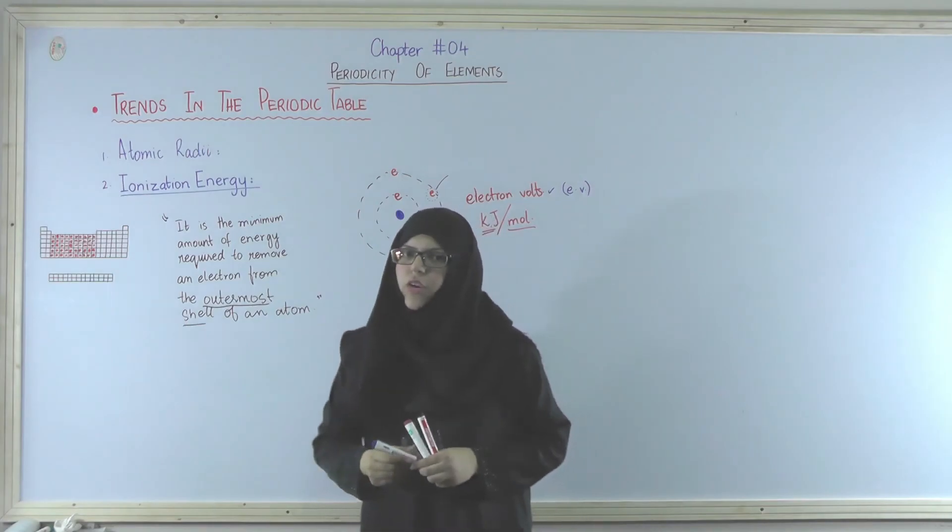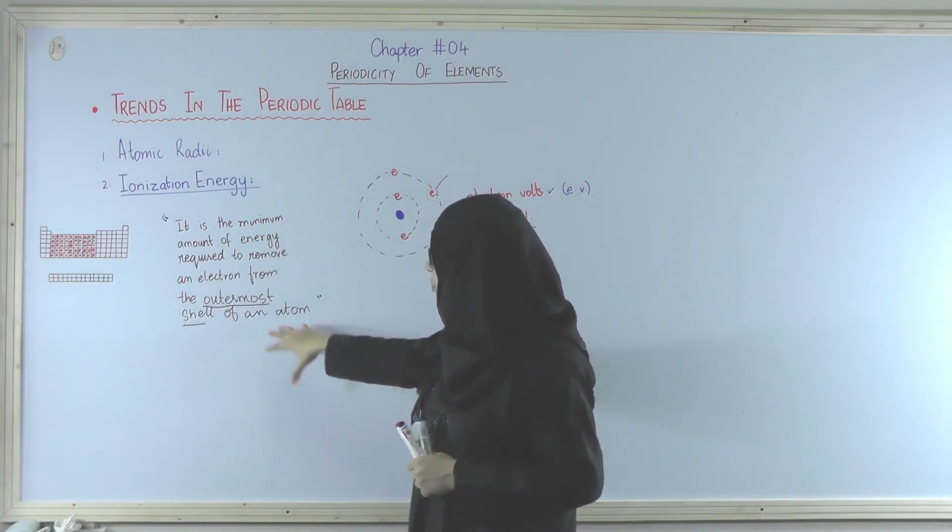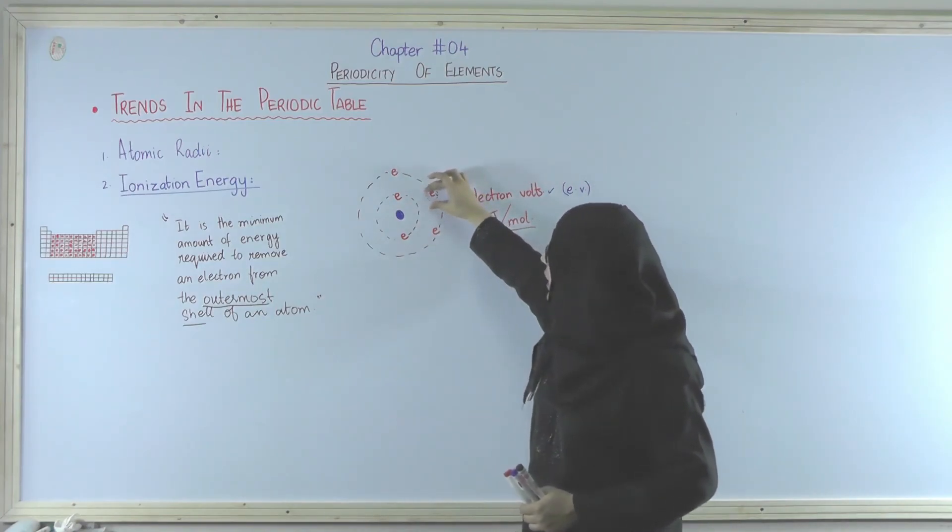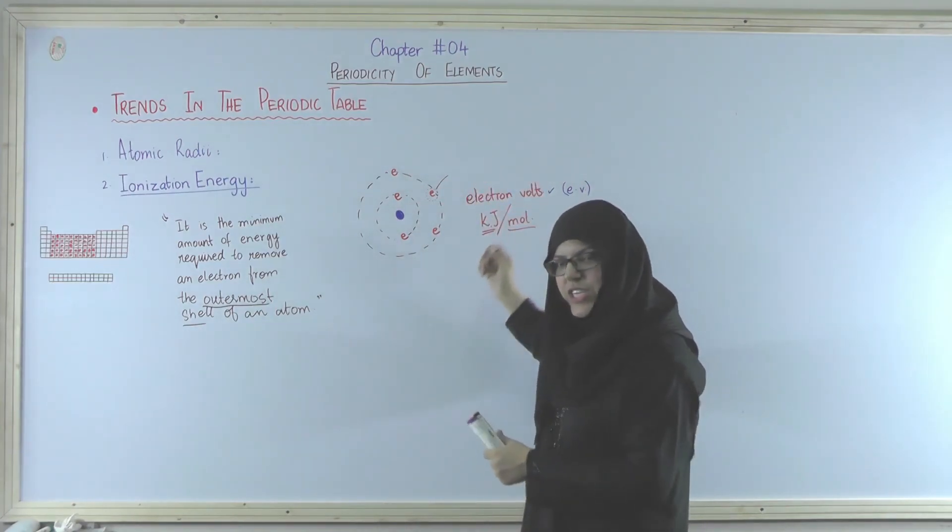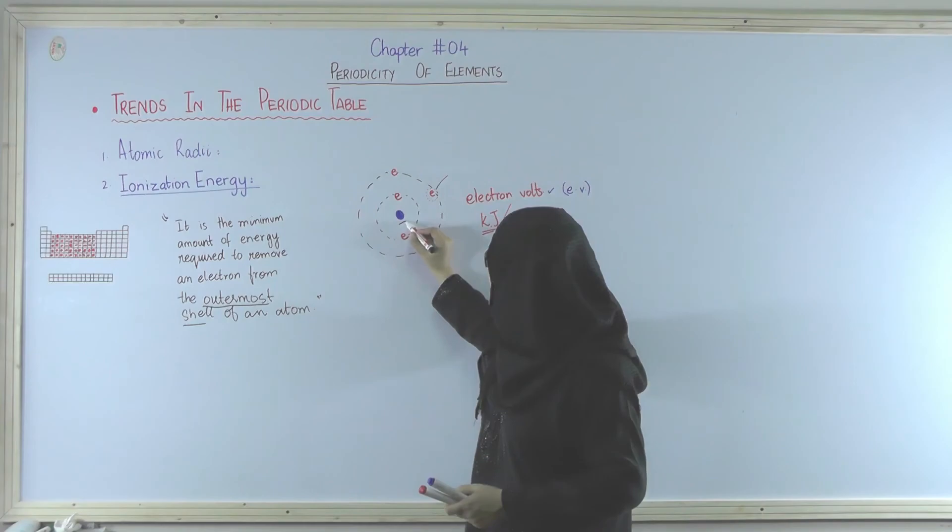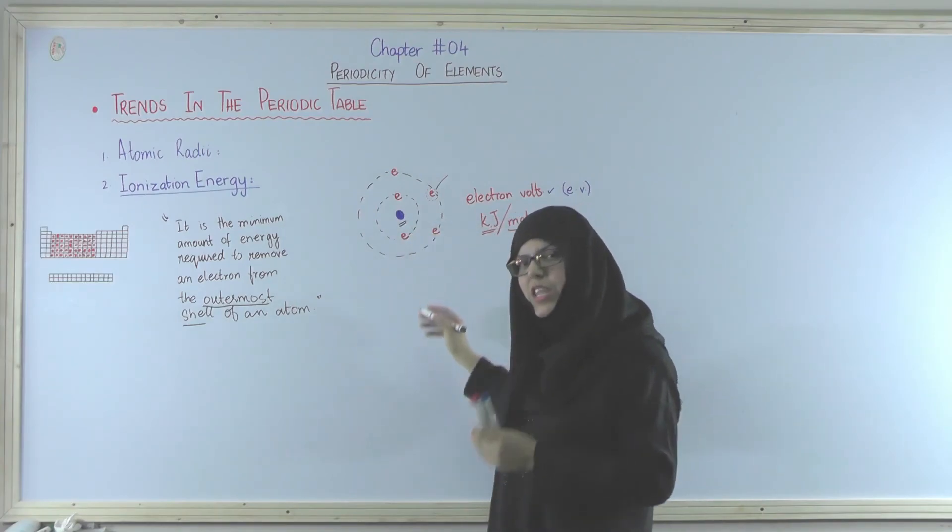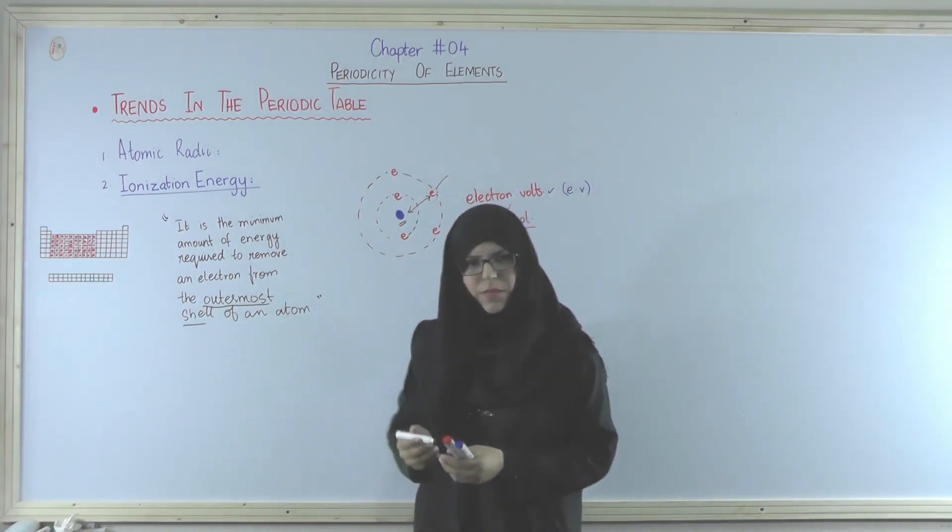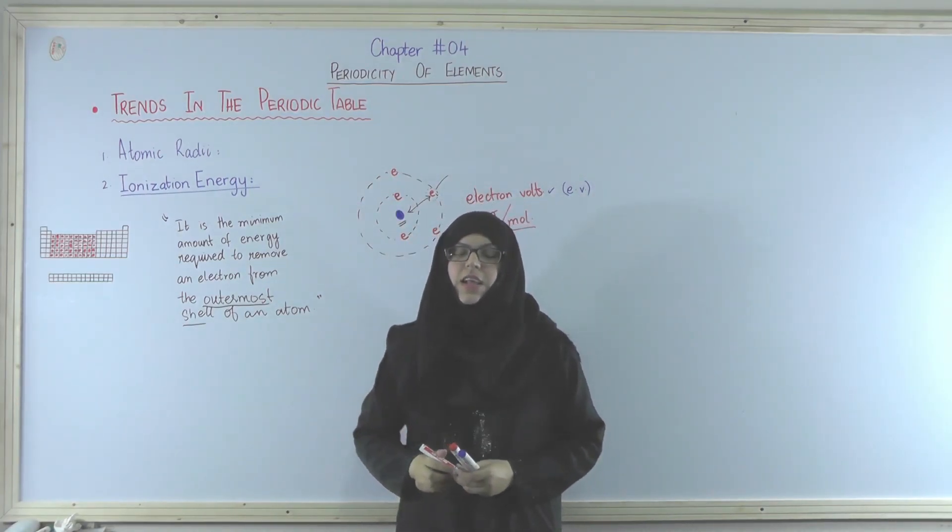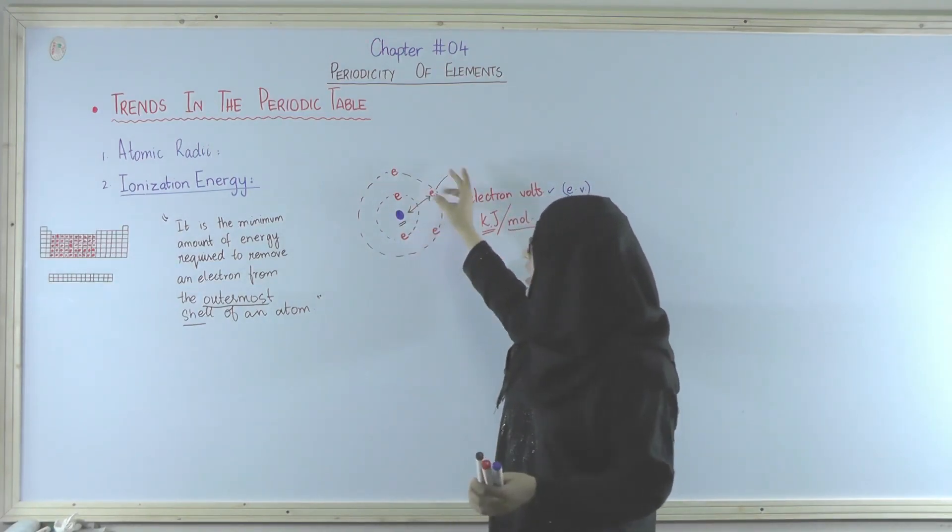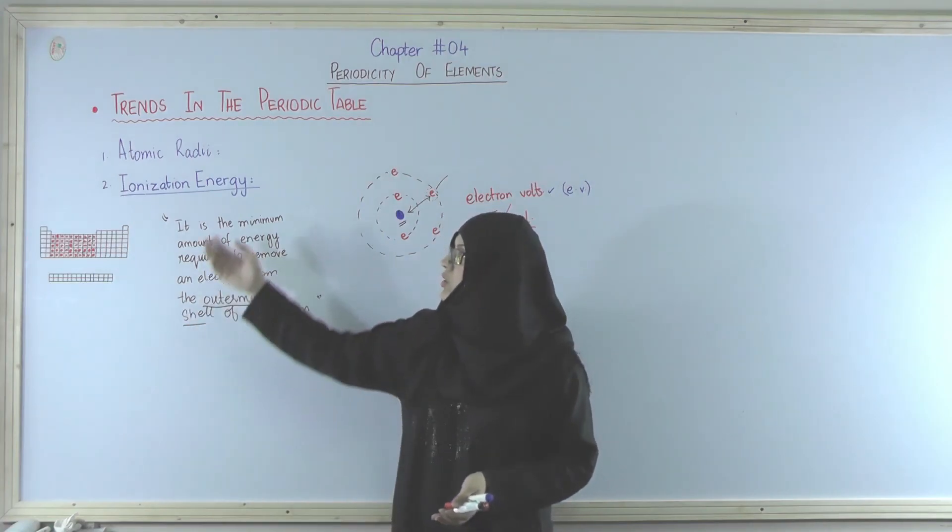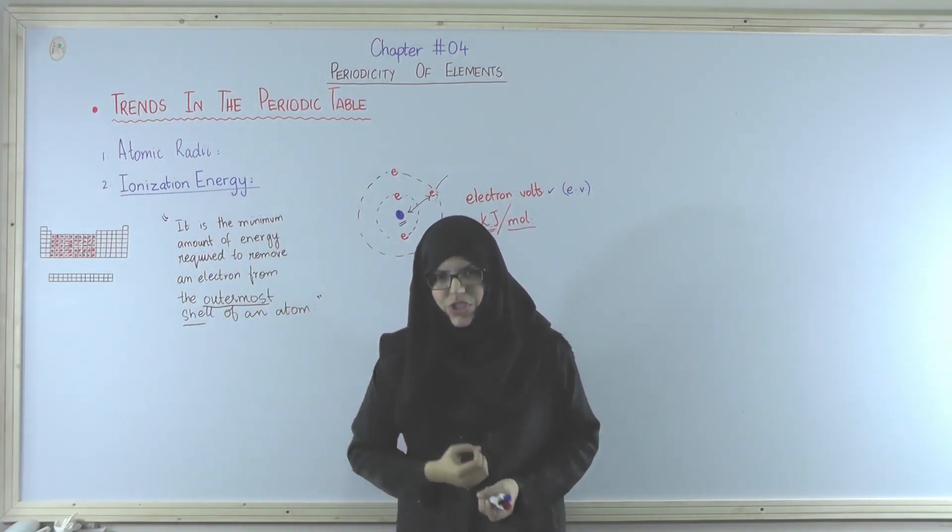E for electron, V for volt. So in this situation, ab agar hum baat karain to ye wala electron nikalne ke liye kitni energy chahiye. Just a little bit more than what the nucleus is putting on this electron to keep it in this shell. Bas hume itni energy nikalni hai jab hum ne usko uske shell mein se remove kar diya. Electron easily bound ho sakta hai. So this energy is called ionization energy.